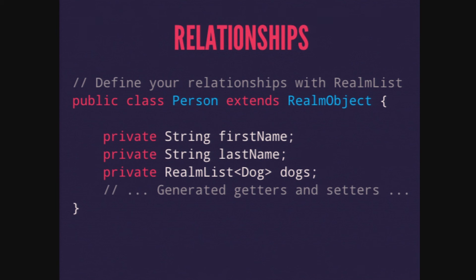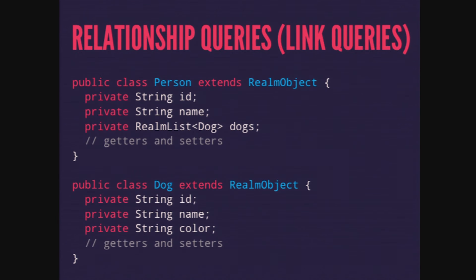What about relationships? If one object contains another, it models very easily. For example, a Person object has a first and last name, and also has some dogs. We just use a RealmList<Dog> — an abstraction on top of List<T>. This tells Realm to store a list of dogs. Think of it in terms of tables: a person table and a dog table with a link between them. A dog may have an owner, a person may have a list of dogs, and you can traverse down into that.